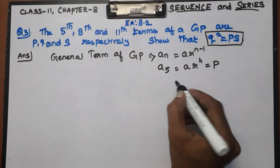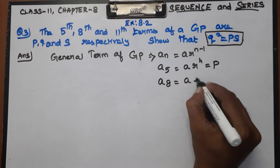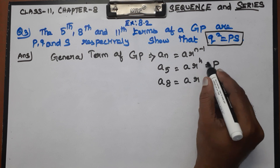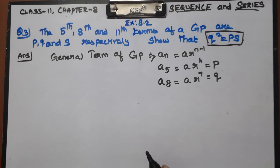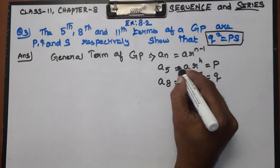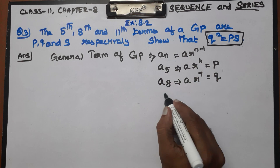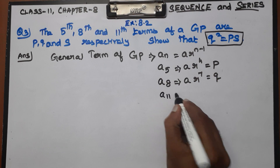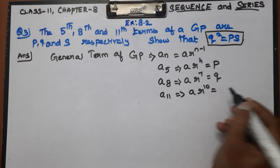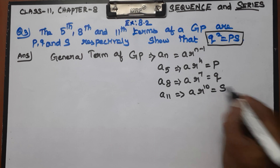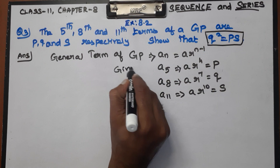Next, the 8th term: A₈ = A·R⁷ = Q. Next, the 11th term: A₁₁ = A·R¹⁰ = S. These are our given values.